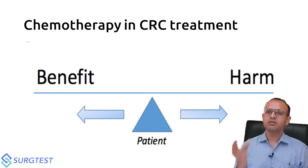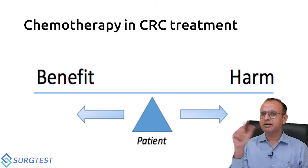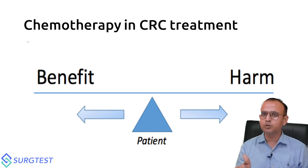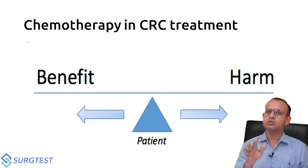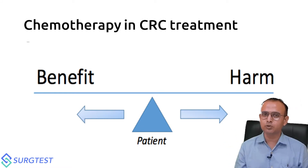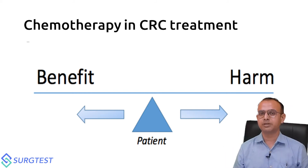This is particularly different at different stages. In stage one, we don't give chemotherapy. In stage two, depending upon many factors, we decide whether to give or not to give chemotherapy. In stage three, we usually give chemotherapy. In stage four also, we prefer to give chemotherapy, with different combinations.